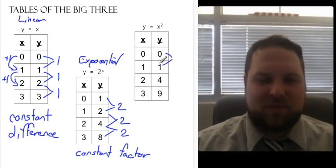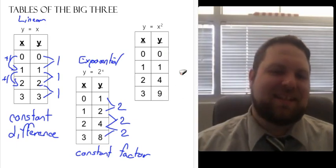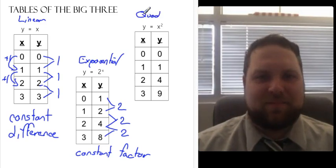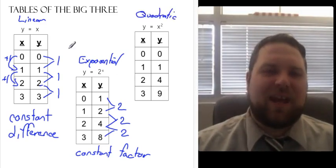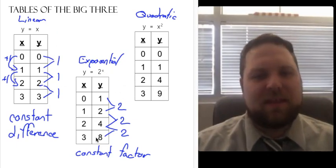Here you'll see that's not the case. One divided by zero, well, that doesn't even work, right? Four divided by one is four. Nine divided by four is going to be 2.25. This just doesn't work out. So we can safely say that this is not exponential and it's not linear, which leads us to a quadratic.